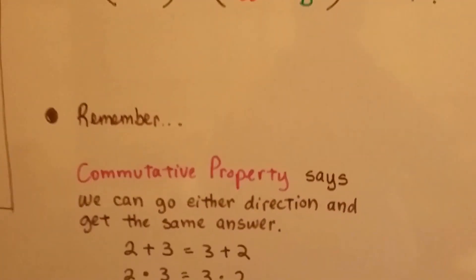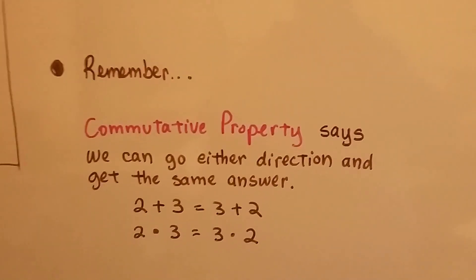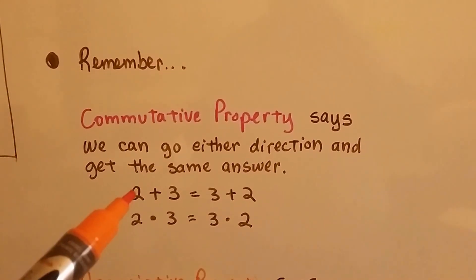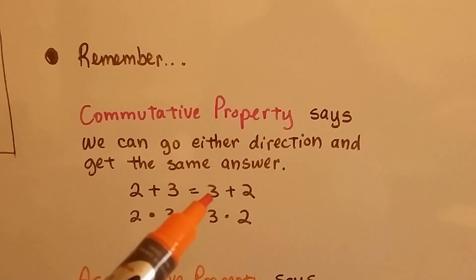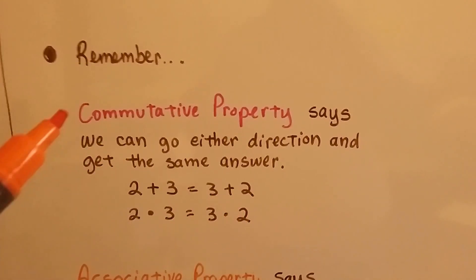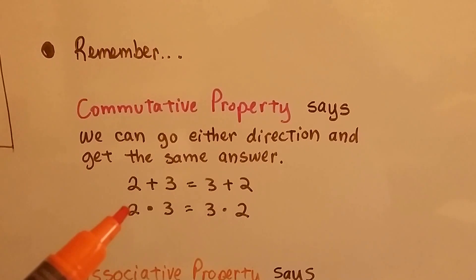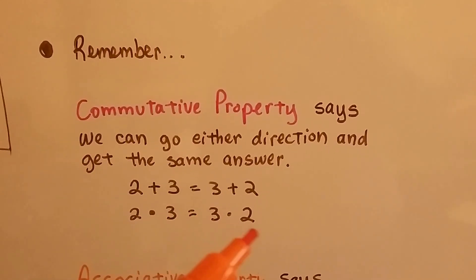Remember, the commutative property says we can go either direction and get the same answer. So we could do 2 plus 3 and that equals 3 plus 2 in the commutative property of addition, and the commutative property of multiplication says 2 times 3 equals 3 times 2.